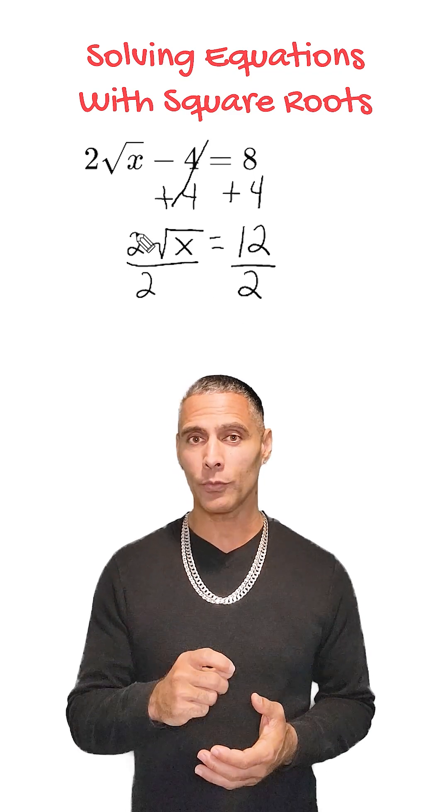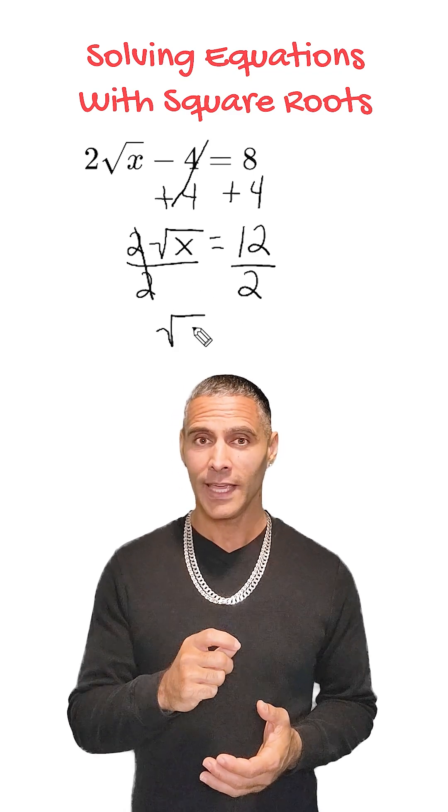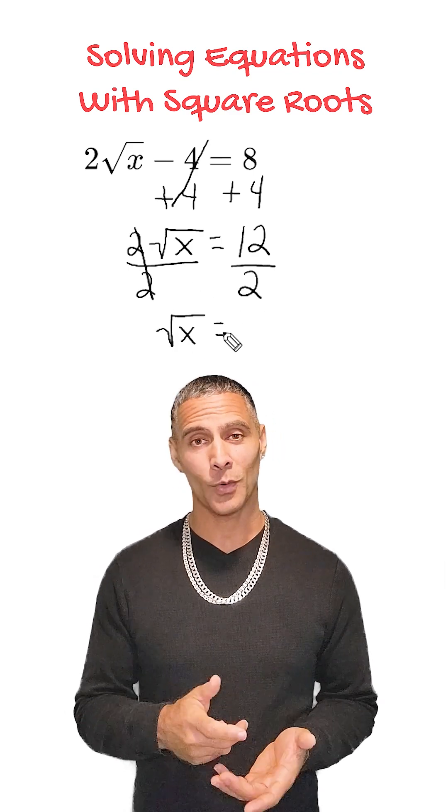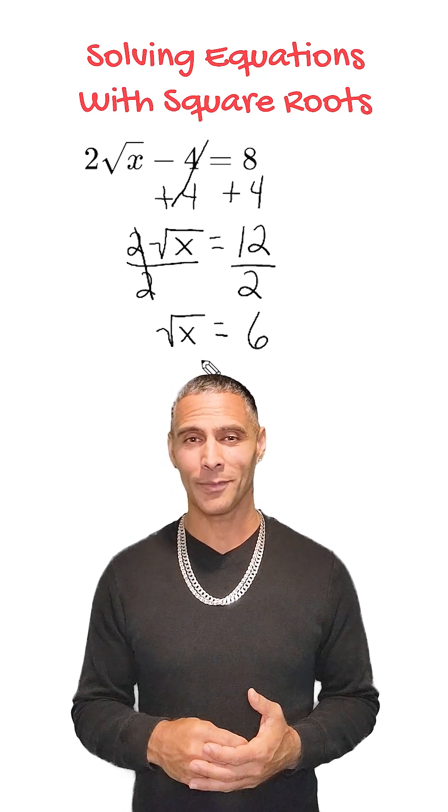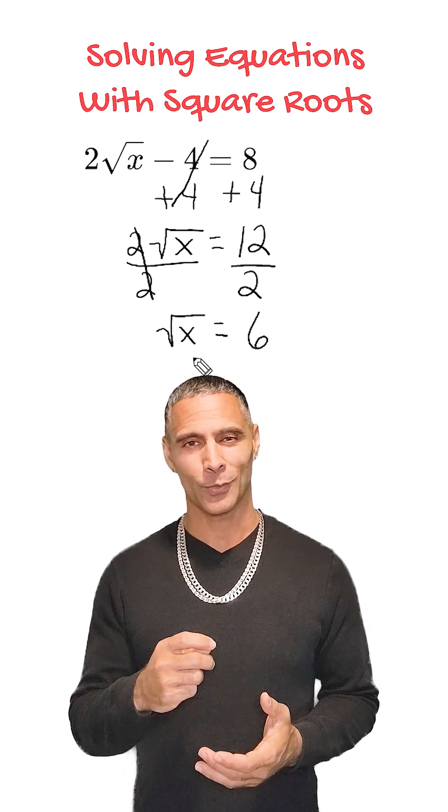This leaves us with just the square root of x on the left side, and on the right-hand side, we divide 12 by 2, which gives us 6. Now the equation becomes the square root of x is equal to 6.